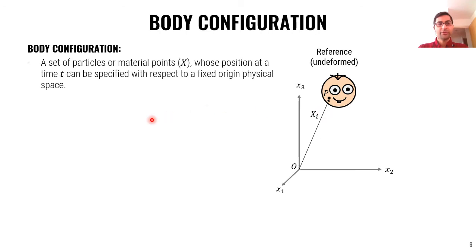Body configuration is a set of particles or material points, capital X, whose position at time t can be specified with respect to a fixed origin in physical space. So, for example, we have a sphere here and it's not deformed. It's in the reference configuration and the position of all the points in that sphere can be described as the body configuration with respect to this reference frame.